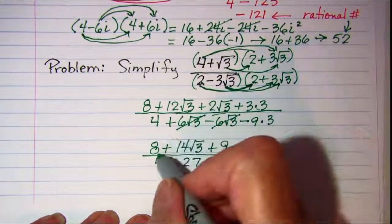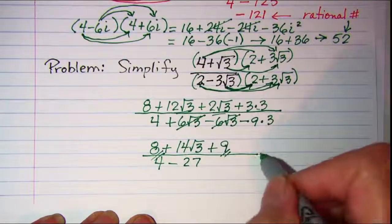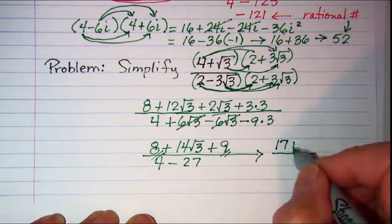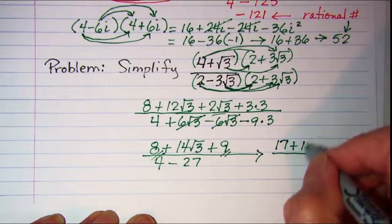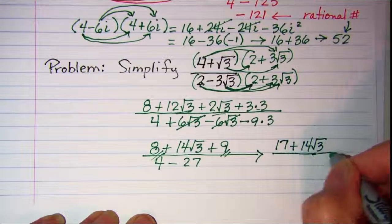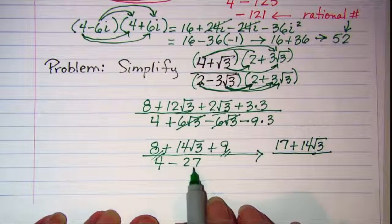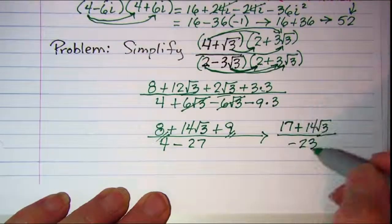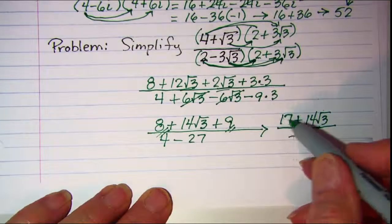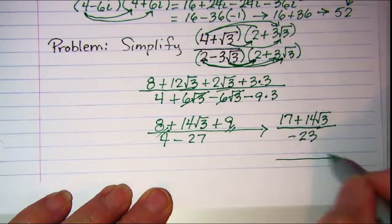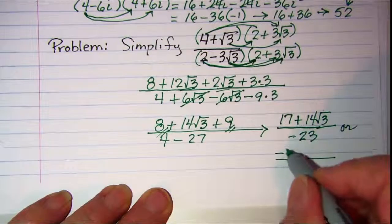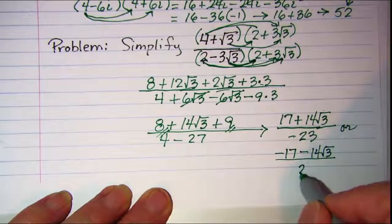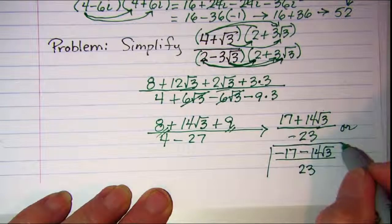I can combine my 8 and my 9. So this is 17 plus 14 root 3 and that will be over negative 23. You could also write this with the negative taken through the top distributed. So you could write this as negative 17 minus 14 root 3 over positive 23. So either of these answers are fine.